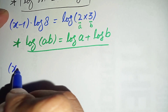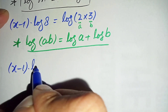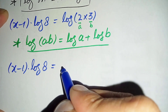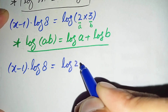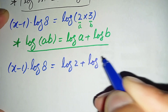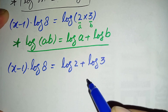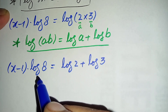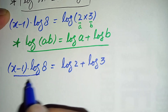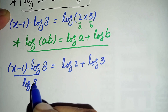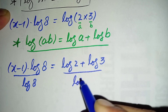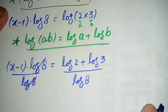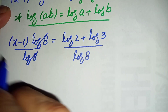So we have x minus 1 times log of 8 is equal to log of 2 plus log of 3. Now we will divide both sides by log of 8. On the left hand side, log of 8 cancels, so only x minus 1 remains.